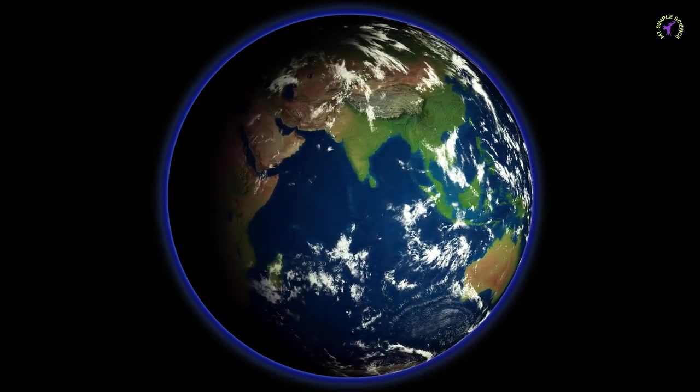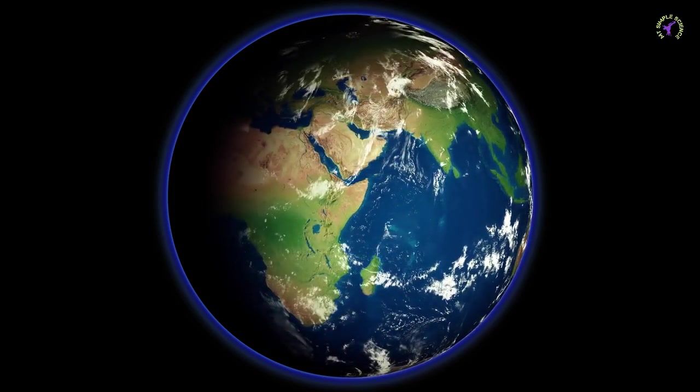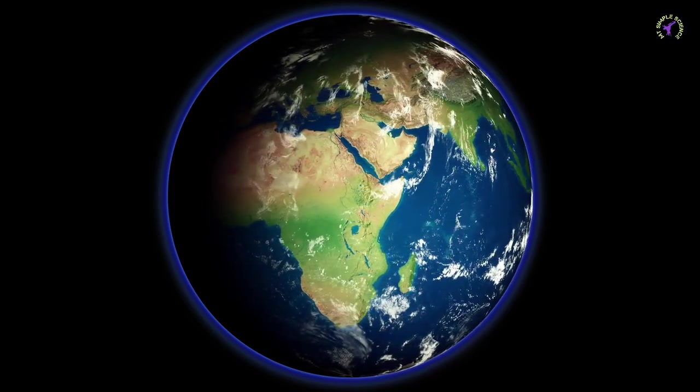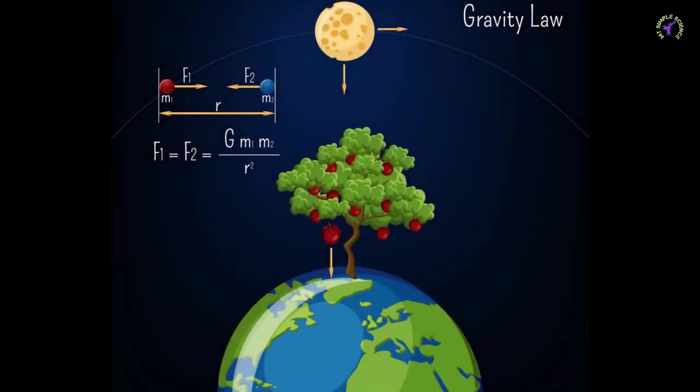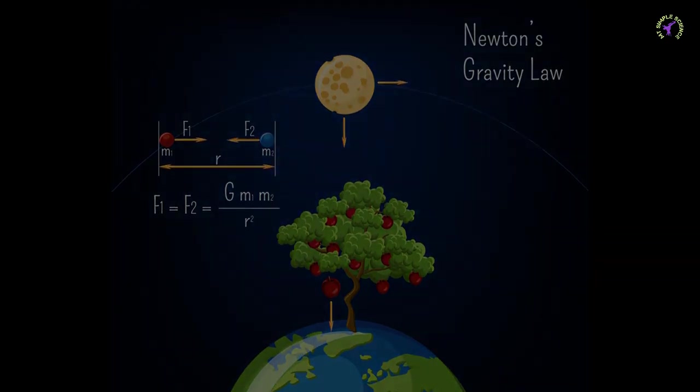We know that the speed of a ball thrown upward in air goes on decreasing because of Earth's gravity. Speed of the ball becomes zero at a certain height and then the ball starts coming downward, and speed goes on increasing until it hits the ground. Gravitational force of Earth goes on decreasing with distance. If we throw the ball with enough velocity to reach a distance where Earth's gravity doesn't act on it, the ball continues to travel away from Earth in space. The minimum velocity required for this is called escape velocity.